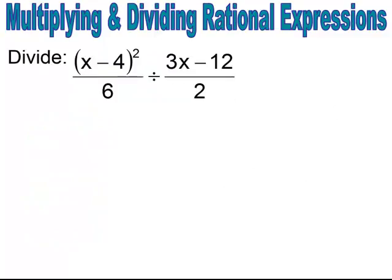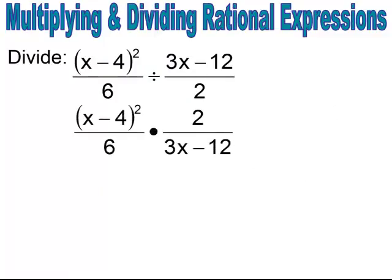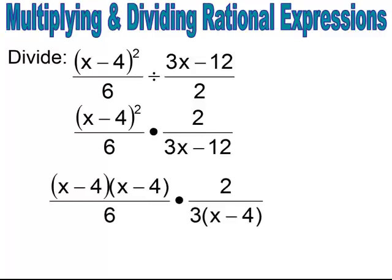Pause and try. Make it multiplication, flip the second rational expression, factor, and then simplify. When we simplify, we end up with x minus 4 all over 9.